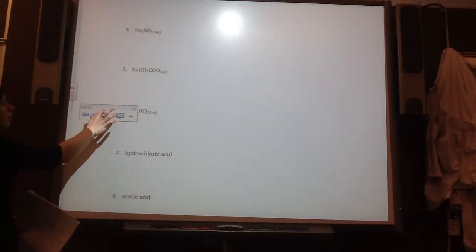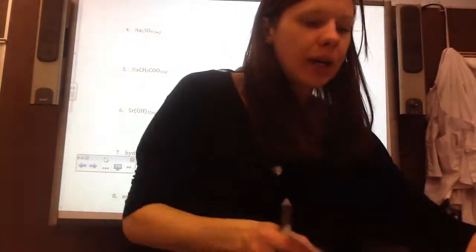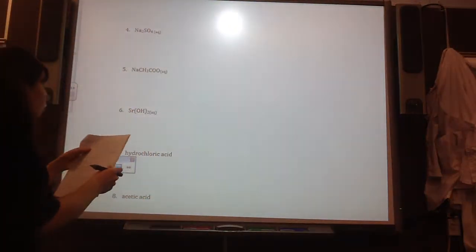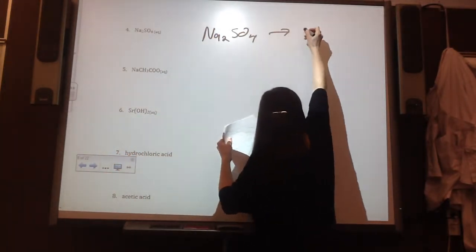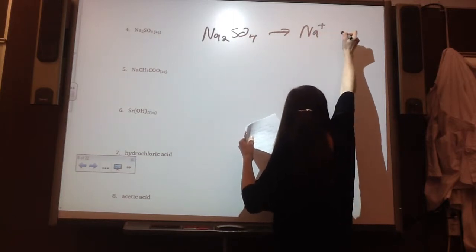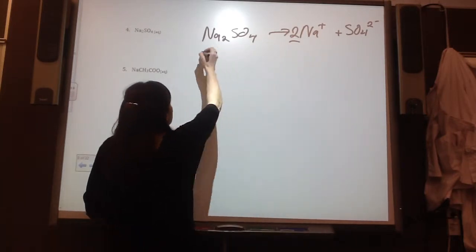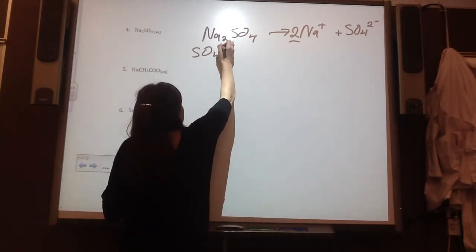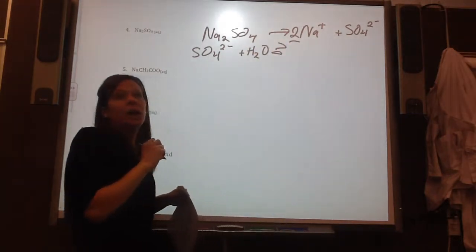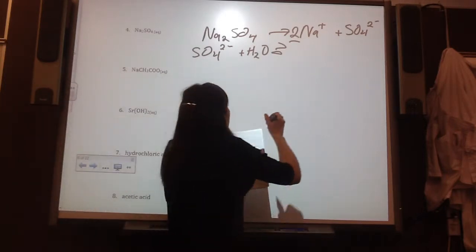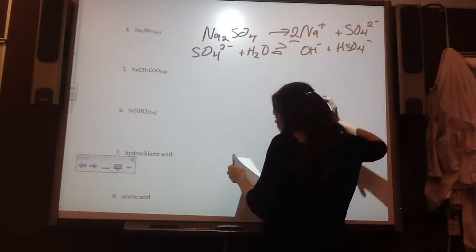Next one. So, Na2SO4. This one was a base. So, first, you would have just the Na2SO4 just straight dissociating. This one, you can have one arrow. But then, when you take the base or the negative ion plus H2O, that's when you have your double arrows because it's not a strong base. So, that one, yeah, your equilibrium arrows.